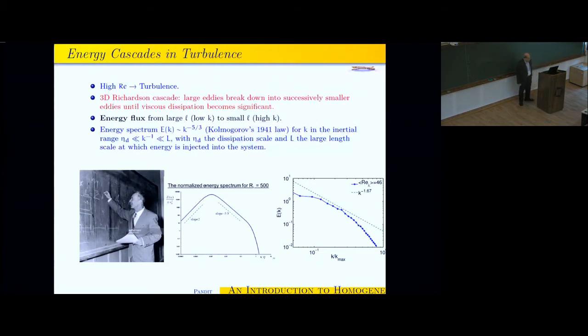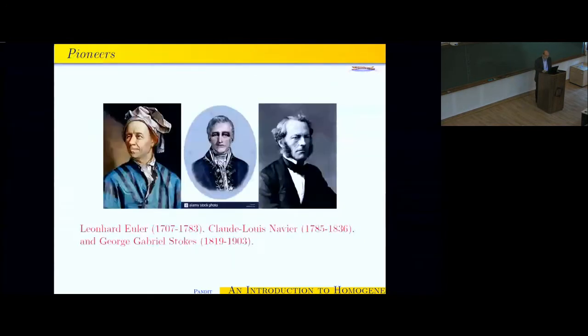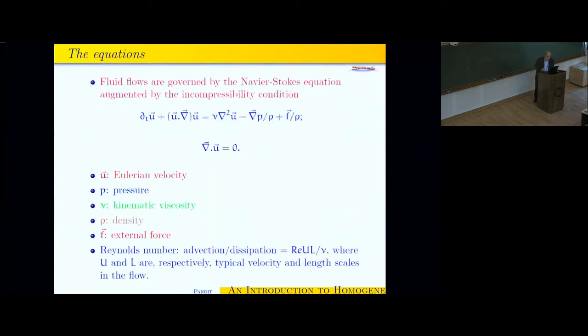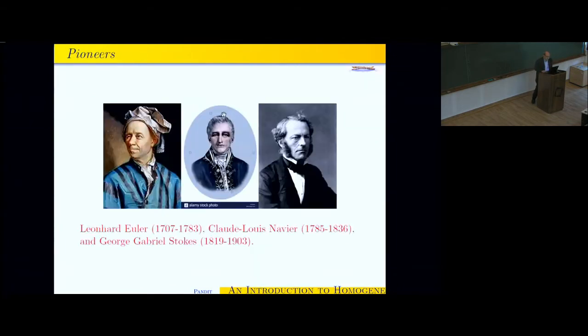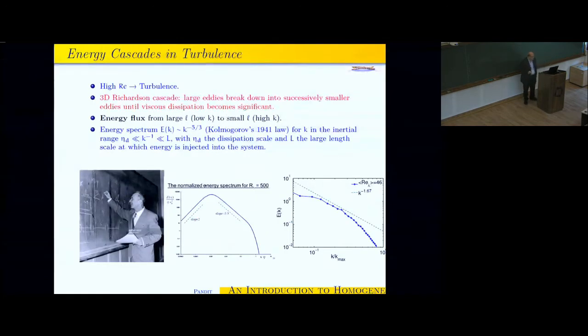If the Reynolds number is high, the fluid goes into a state of turbulence, and for the rest of this talk, I will only consider homogeneous isotropic turbulence. So there is a picture which goes back to Richardson of a cascade, that in such a turbulent flow, there are these large eddies of vortical structures. They break down successively into smaller and smaller daughter eddies, until they get to a scale where viscous dissipation becomes significant.